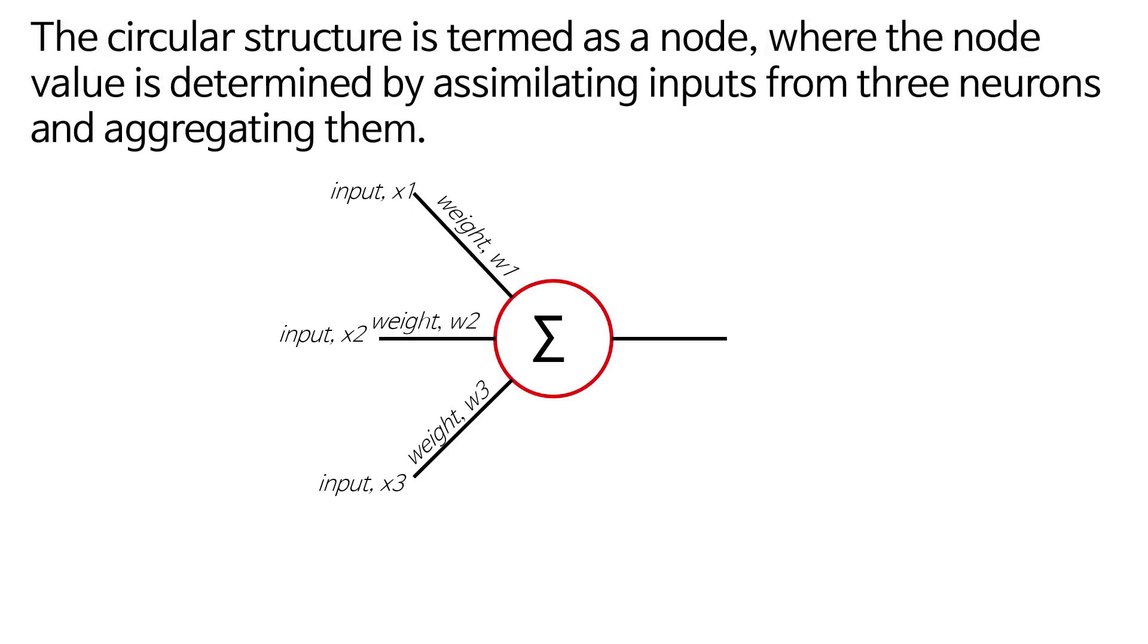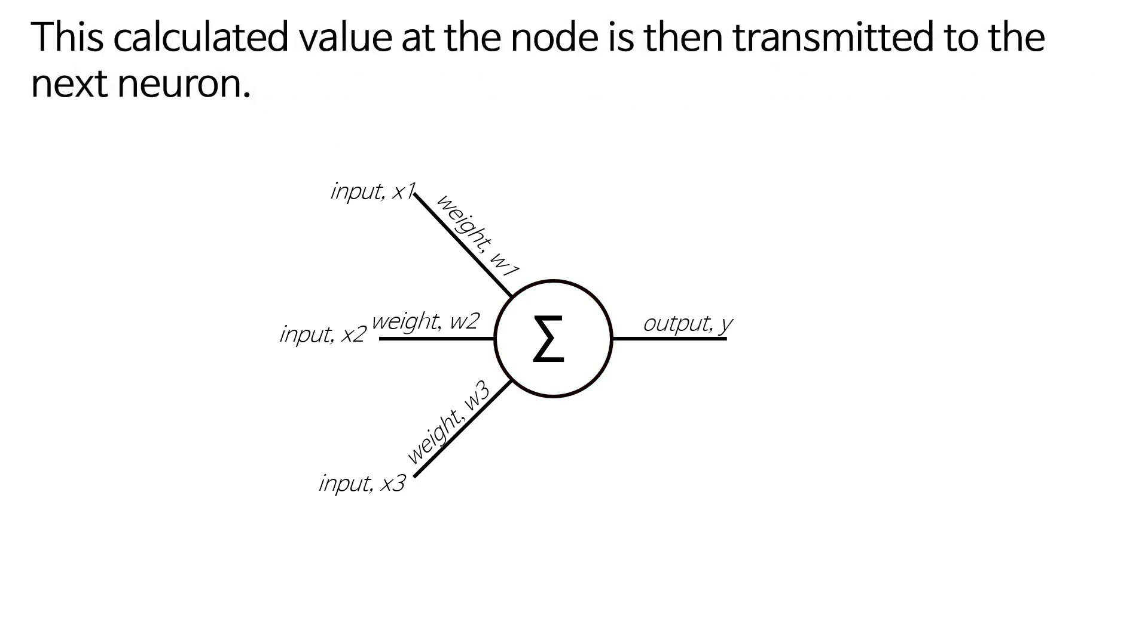The circular structure is termed as a node, where the node value is determined by assimilating inputs from three neurons and aggregating them. This calculated value at the node is then transmitted to the next neuron.